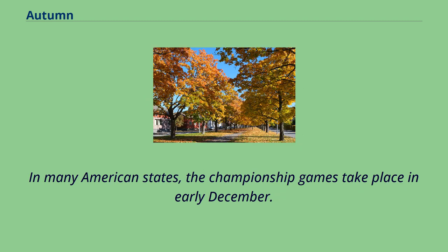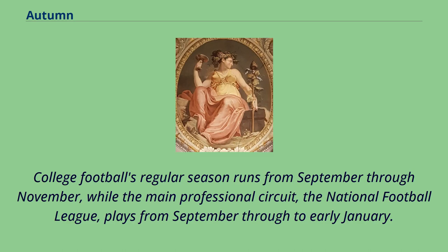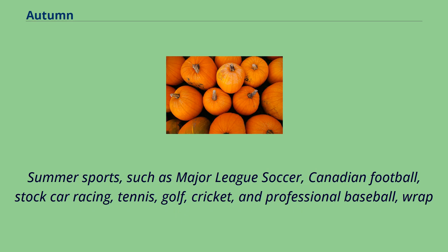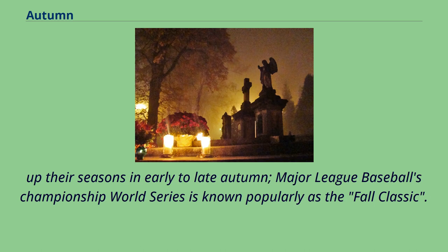In many American states, the championship games take place in early December. College football's regular season runs from September through November, while the main professional circuit, the National Football League, plays from September through early January. Summer sports such as major league soccer, Canadian football, stock car racing, tennis, golf, cricket, and professional baseball wrap up their seasons in early to late autumn. Major League Baseball's championship World Series is known popularly as the fall classic.